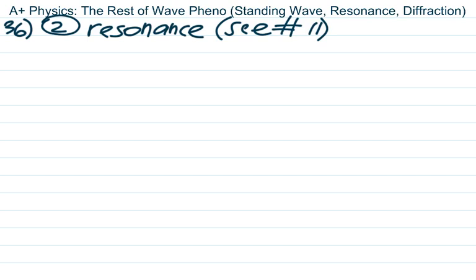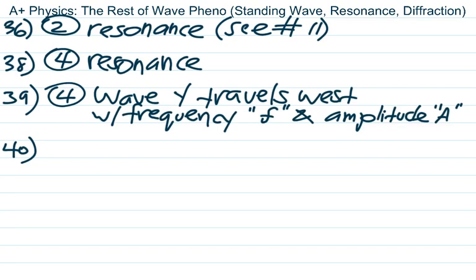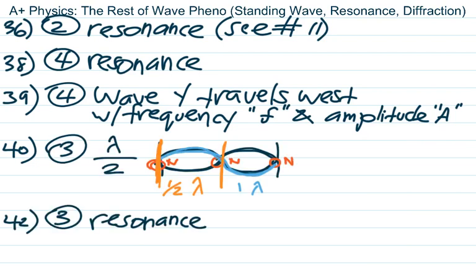Number 36 is similar to number 11 — the answer is resonance. The phrase 'natural frequency' is a dead giveaway for a resonance question — answer is choice four. Number 39 asks about standing waves: everything about the two waves must be the same except direction. If wave X goes east with frequency f and amplitude A, wave Y must go west with frequency f and amplitude A. Number 40: the distance from one node to the next is always lambda over two — choice three.